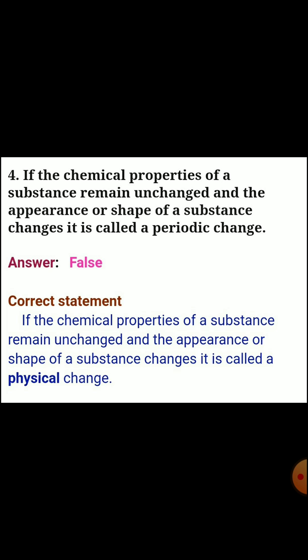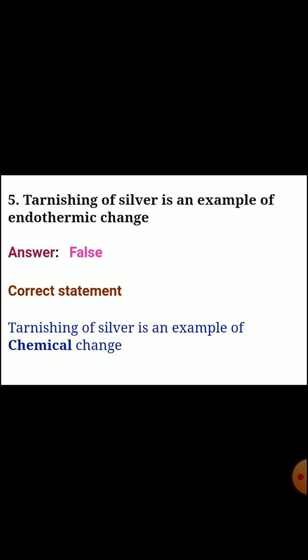Question four: if the chemical properties of a substance remain unchanged and the appearance or shape of a substance changes, it is called a periodic change. Answer: false. Correct statement - it is called a physical change. Question five: tarnishing of silver is an example of an endothermic change. Answer: false. Correct statement - tarnishing of silver is an example of a chemical change.